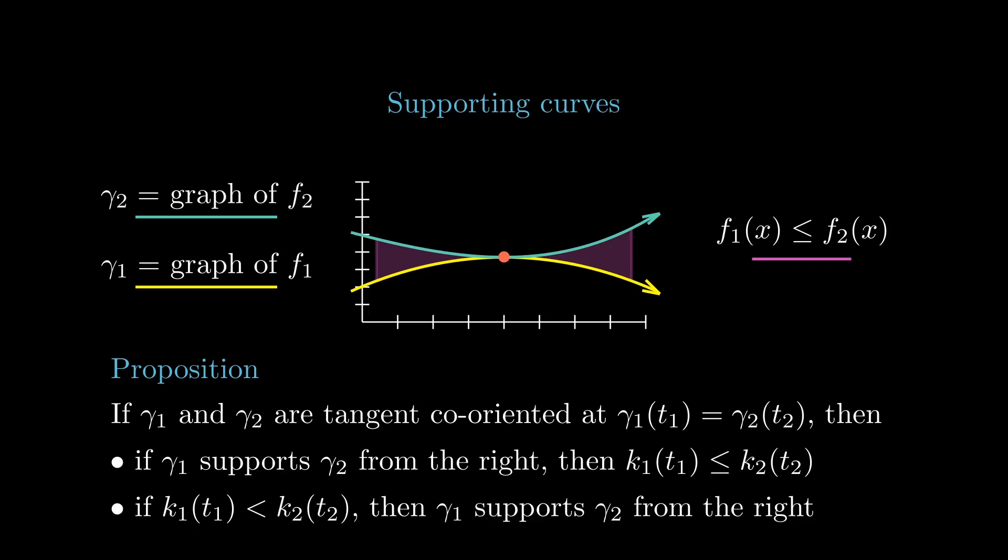then if gamma1 locally supports gamma2 from the right, then its curvature at the corresponding time is bounded above by the one of gamma2. And if the curvature of gamma1 at time t1 is strictly less than the curvature of gamma2 at time t2, then gamma1 supports gamma2 from the right at such point.